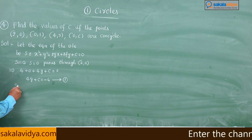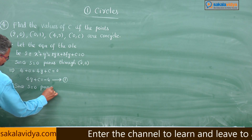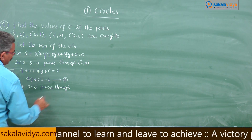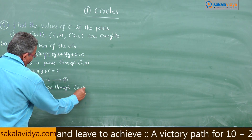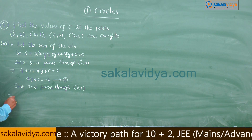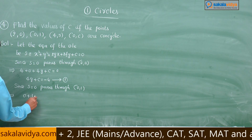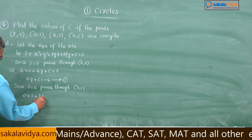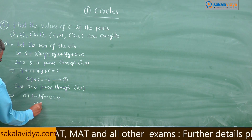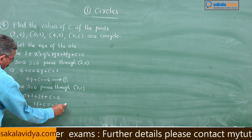Since S = 0 passes through (0,1), substituting gives 0 + 1 + 2f + c = 0, so we get 2f + c = −1. Call this equation 2.